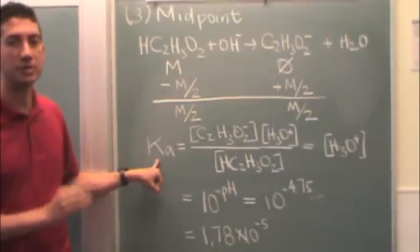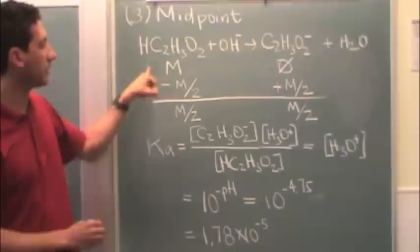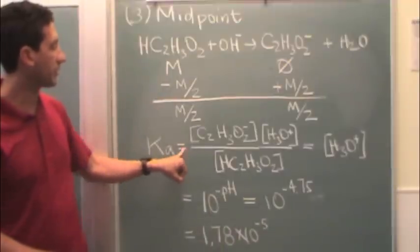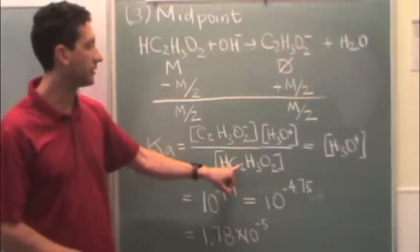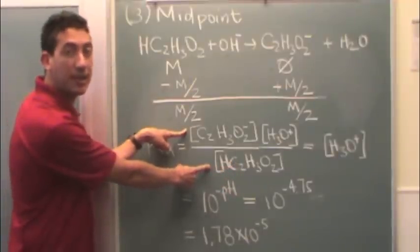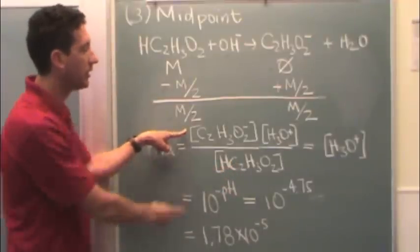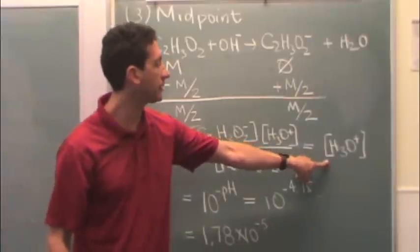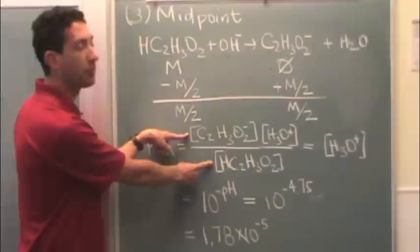Here's the Ka equation for the general equation for the acid. Not this equation, but the general equation. That's where Ka comes from. And so you see we have products over reactants. If these two concentrations are the same, they drop out of the equation. So we're just left with the H3O plus concentration. Because notice they're both M over 2.